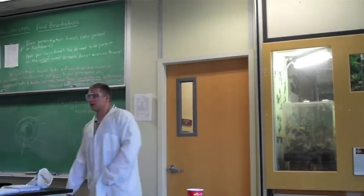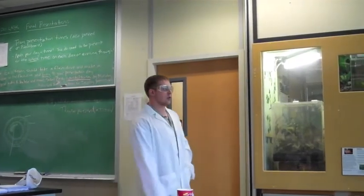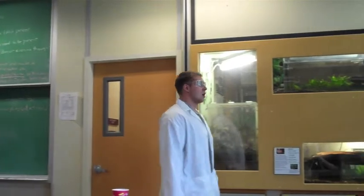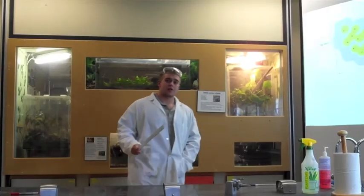And today we'll be talking about the mutually beneficial symbiotic relationship between Ambystoma maculatum and Oophila amblystomatis. What are they? Yellow spotted salamander and green algae.